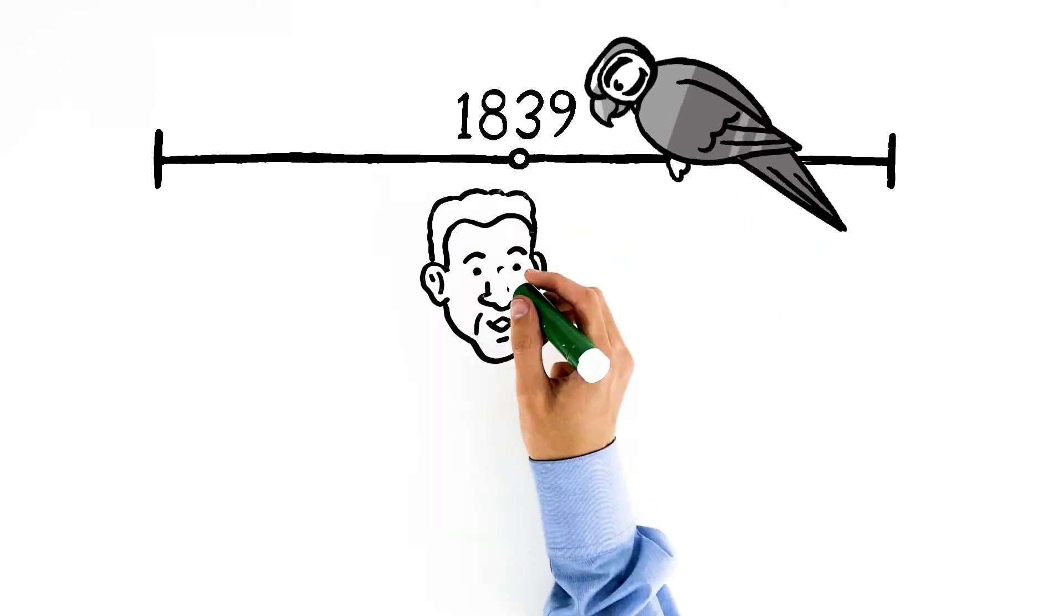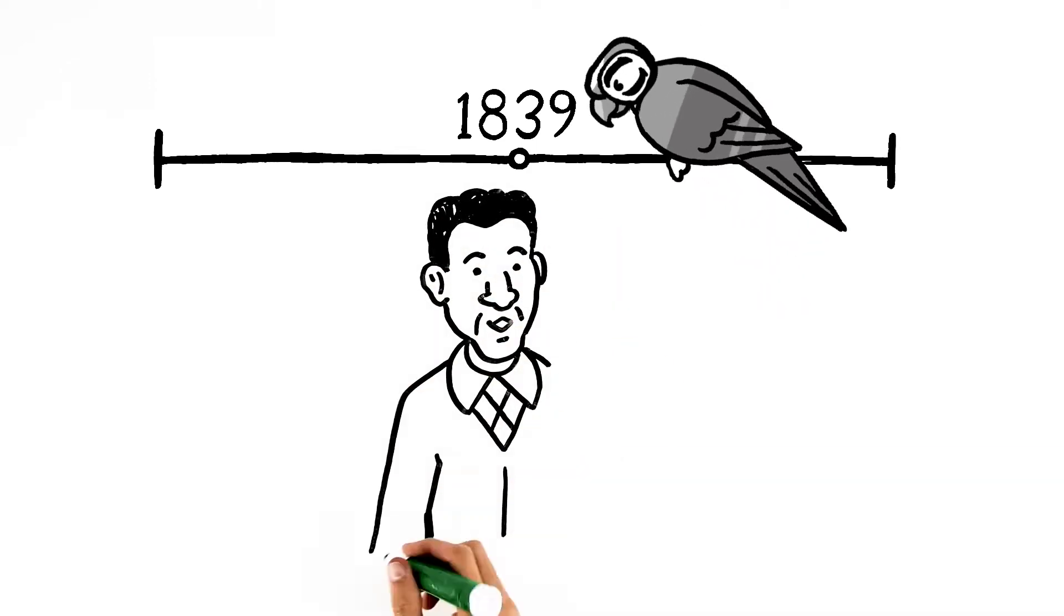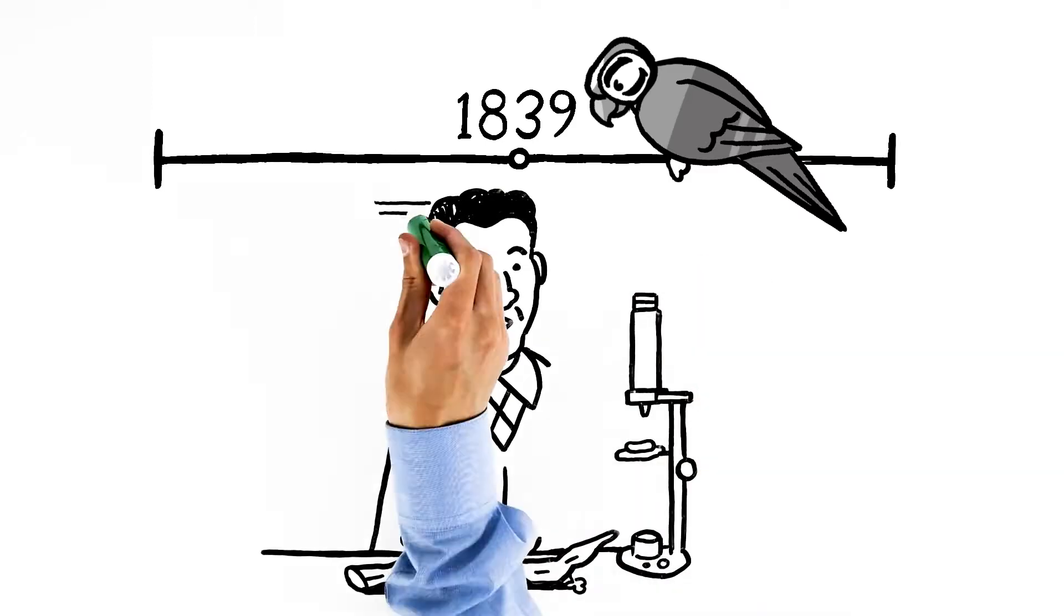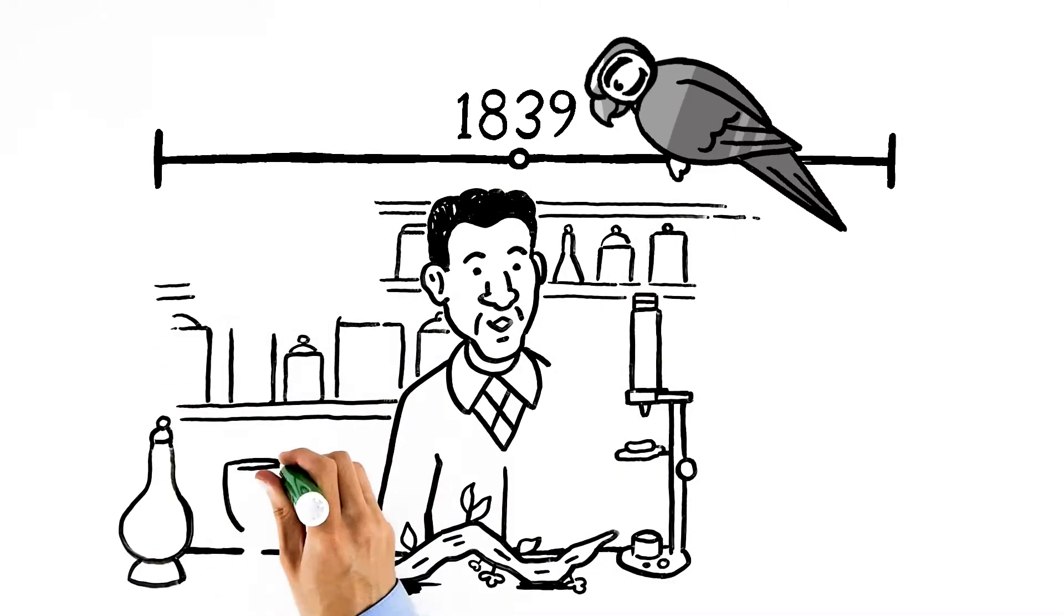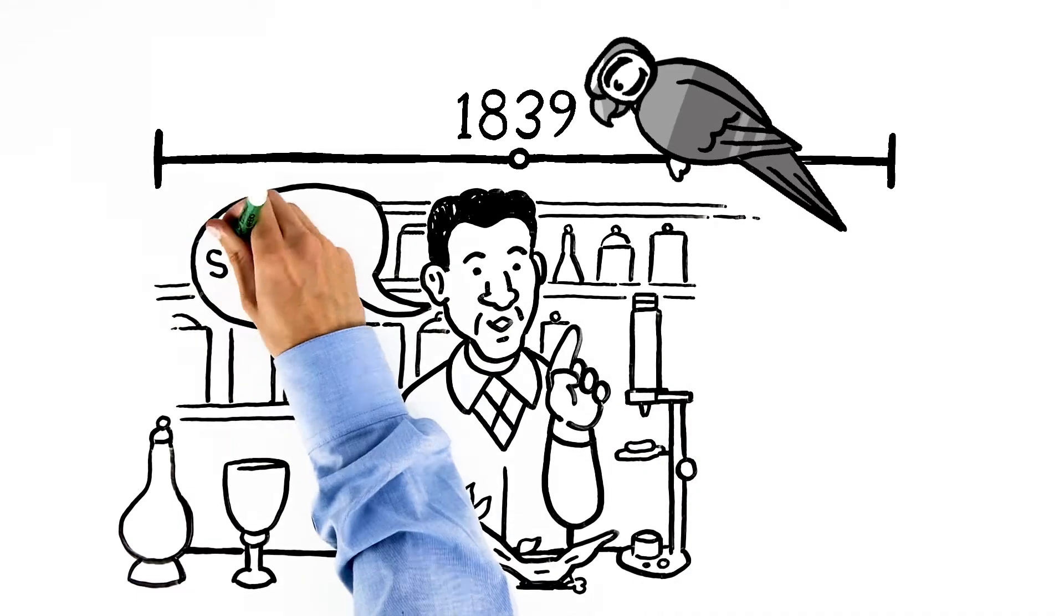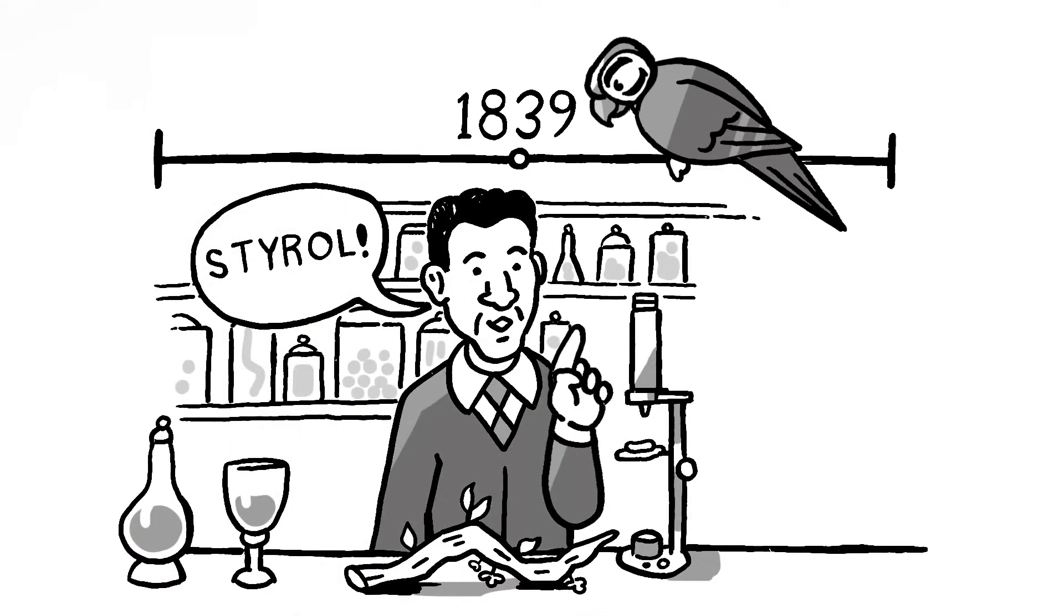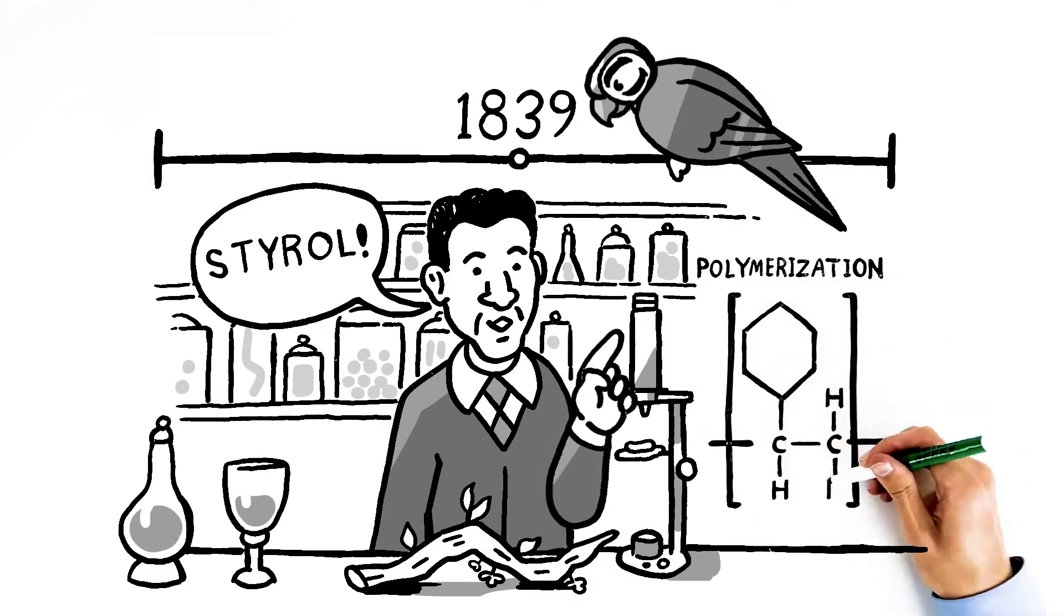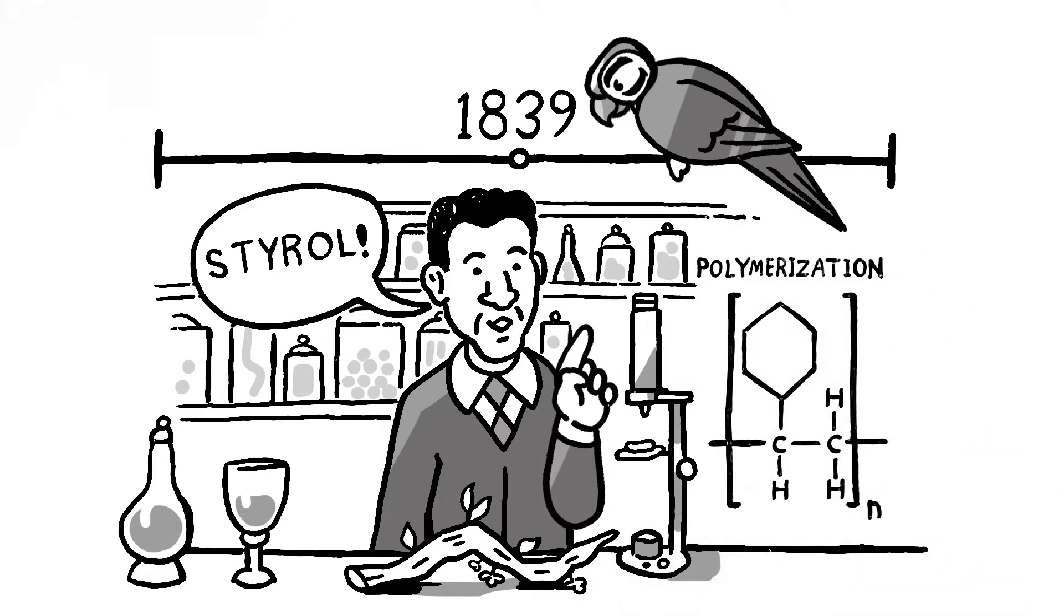In 1839, German pharmacist Edward Simon first discovered polystyrene by isolating a substance from the bark of a styrax tree. He called it styrene in English or styrol in German. Notice our name, Styrolution, says it all. But back in 1839, Edward Simon had no idea that he had just witnessed the first recorded incident of what we now call polymerization.